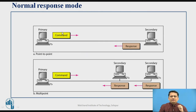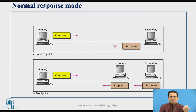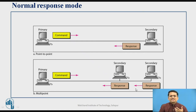Here is an example: this is the primary station, this is the secondary station — the primary station sends the command and the secondary station sends a response frame. This is a point-to-point configuration. You may also have a point-to-multipoint configuration, where a command is sent to more than one secondary station and both secondary stations respond to the primary station that sent the command. This is about the Normal Response Mode.